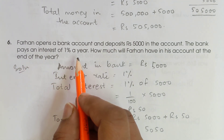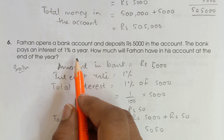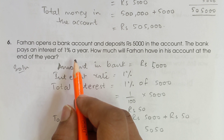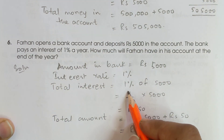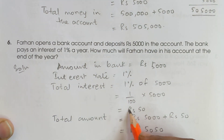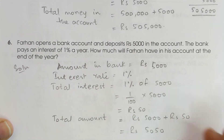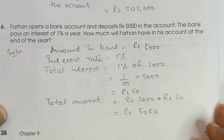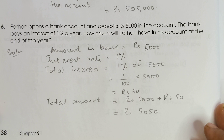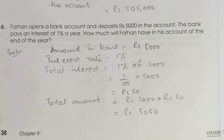How much will Farhan have in his account at the end of the year? It is the same type of question with a different amount. You solve it the same way: find 1% of the given amount and add it to the principal to get the total bank balance.